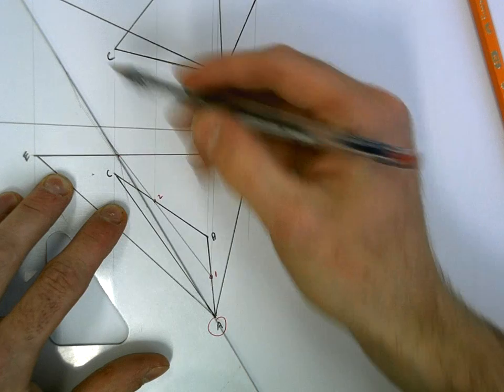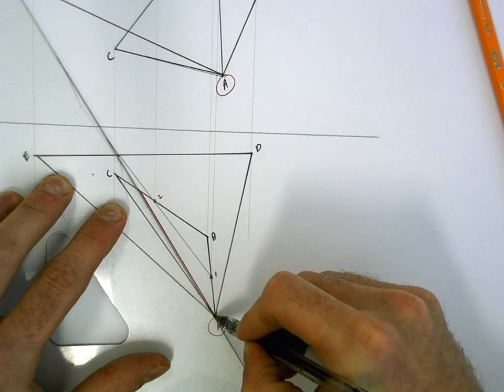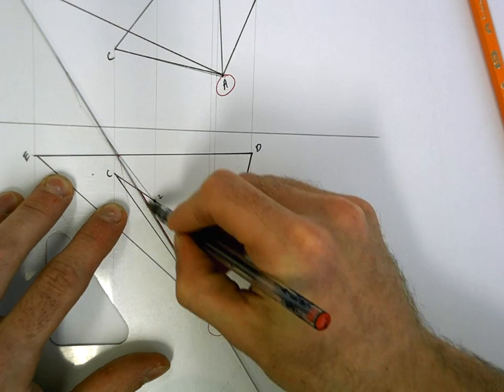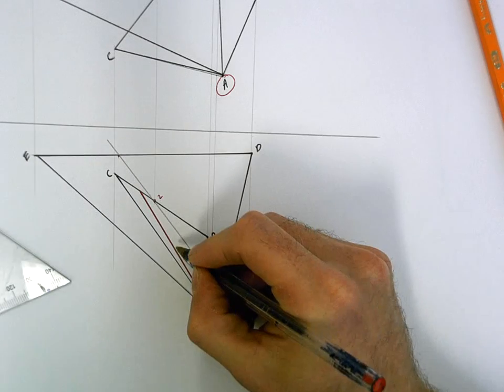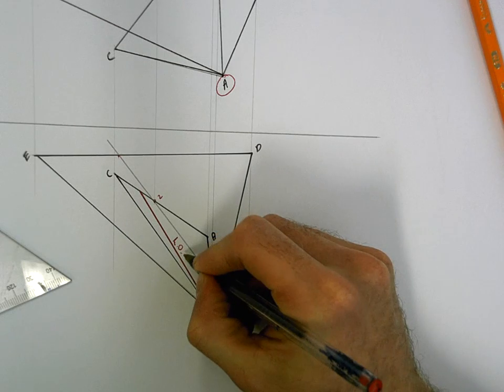We're doing it by joining these two points together. So my line of intersection in plan view will be from point A out as far as there. Label that as line of intersection.